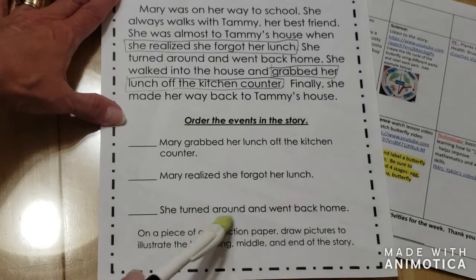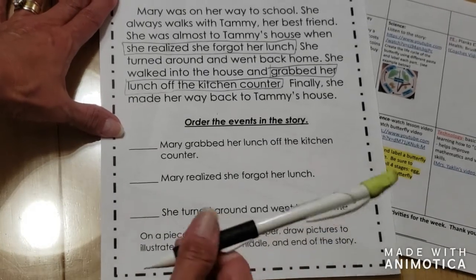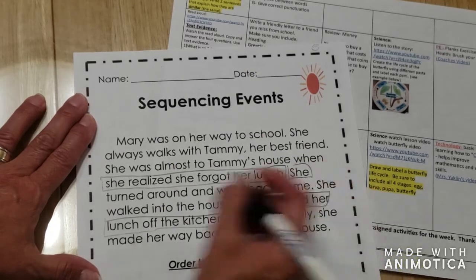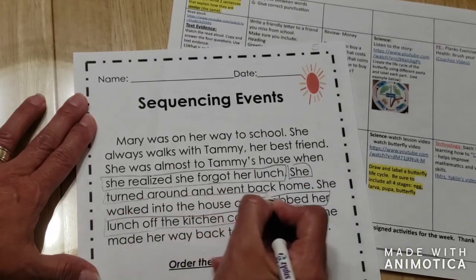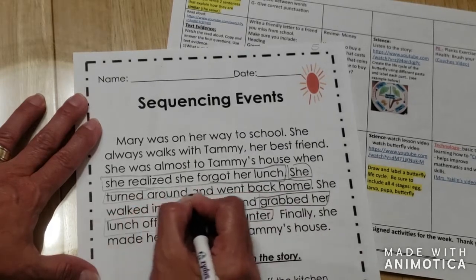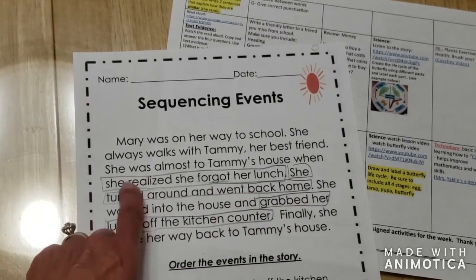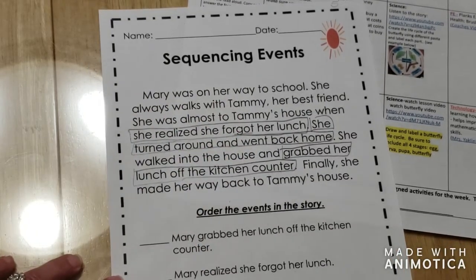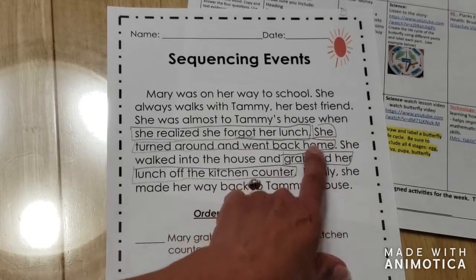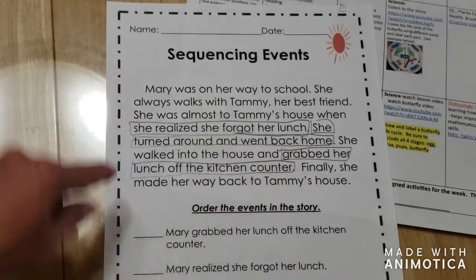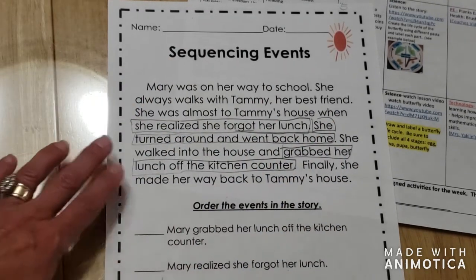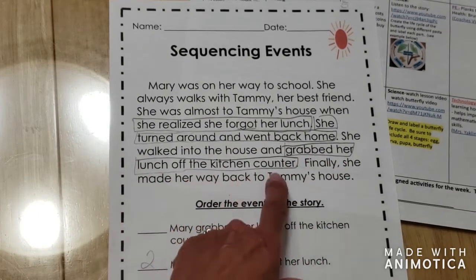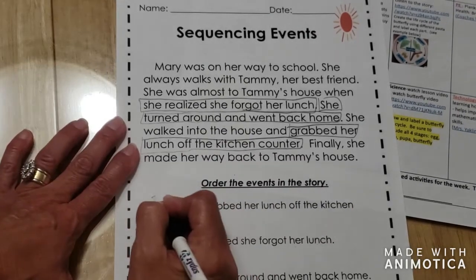The last one says 'she turned around and went back home.' If we go back over here, here it is — 'she turned around and went back home.' Now I can look at where I found them. This seems to be first: 'she realized she forgot her lunch' — so I'm going to put a one here. Then my next sentence was 'she turned around and went back home,' right here — so this would be number two. And then finally, 'grabbed her lunch off the kitchen counter' — this would be a three.